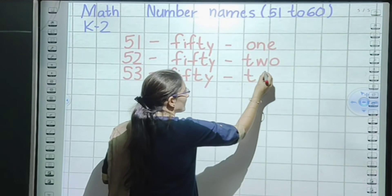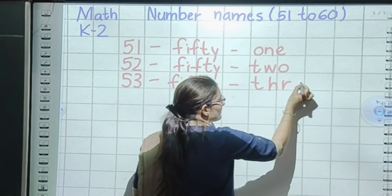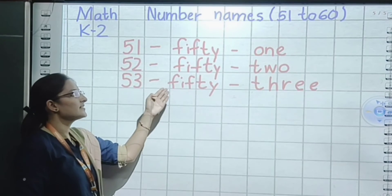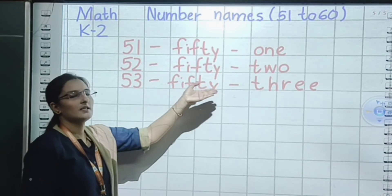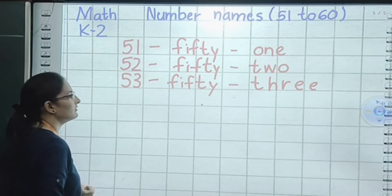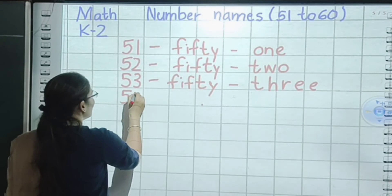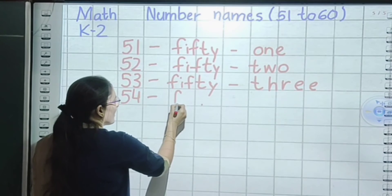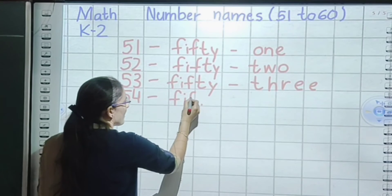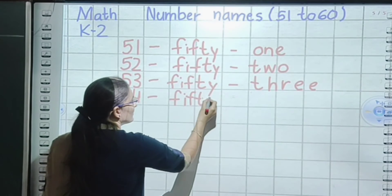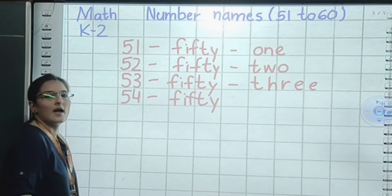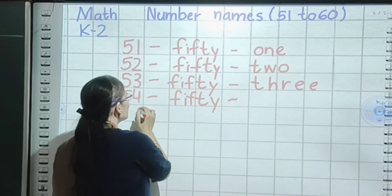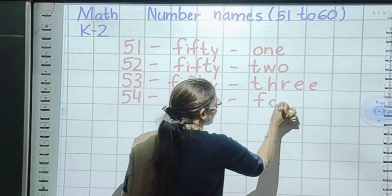Now here, 53. Small sleeping line. Spelling of 50: F, I, F, T, Y — fifty. Small sleeping line. Now spelling of 3: T, H, R, double E — three. So 53 is fifty-three.